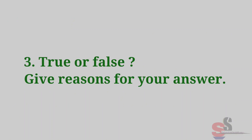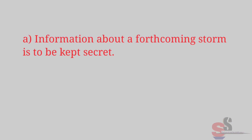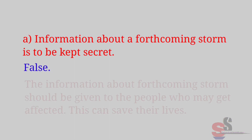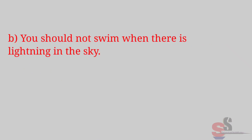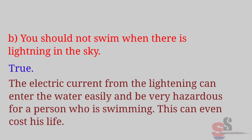Question 3: True or False — give reasons for your answer. A. Information about a forthcoming storm is to be kept secret. False. The information about a forthcoming storm should be given to the people who may get affected; this can save their lives. B. You should not swim when there is lightning in the sky. True. The electric current from lightning can enter the water easily and be very hazardous for a person who is swimming.